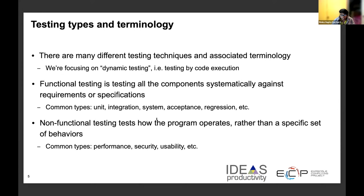There is a lot of theory and associated terminology about testing and sometimes it can be confusing. For this tutorial we'll focus on what is called dynamic testing, which is testing by executing the code itself. Tests are often separated into two types: functional testing and non-functional testing. Functional testing is testing all components systematically against a set of requirements or specifications — for example, unit testing, integration testing, acceptance testing and so on. Non-functional testing, on the other hand, is related to how the program operates or behaves — for example, performance testing, stability testing, or security testing.